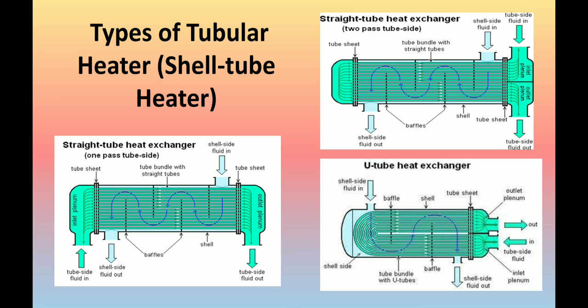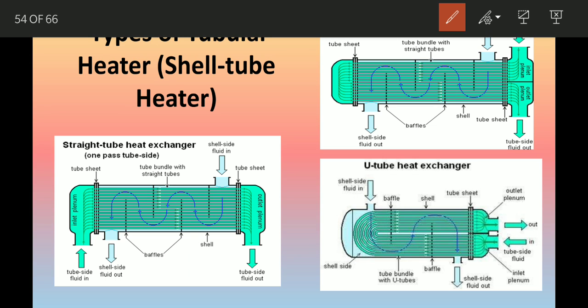Here you can see diagrams of types of tubular heaters and shell and tube heaters. The first type is the straight tube heat exchanger. In the one-pass heater, fluid enters from one side and exits from the other side. In the two-pass heater, the fluid enters from one side, flows through, returns, and exits — flowing through two passes. That is why it is called a two-pass heater.